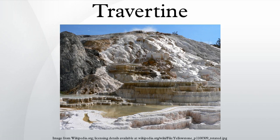A decade ago, Italy had a near monopoly on the world travertine market. Now significant supplies are quarried mainly in Turkey, Iran, Mexico, and Peru. Two or three small travertine producers operate in the western United States. U.S. demand for travertine is about 0.85 million tons per year, almost all of it imported.